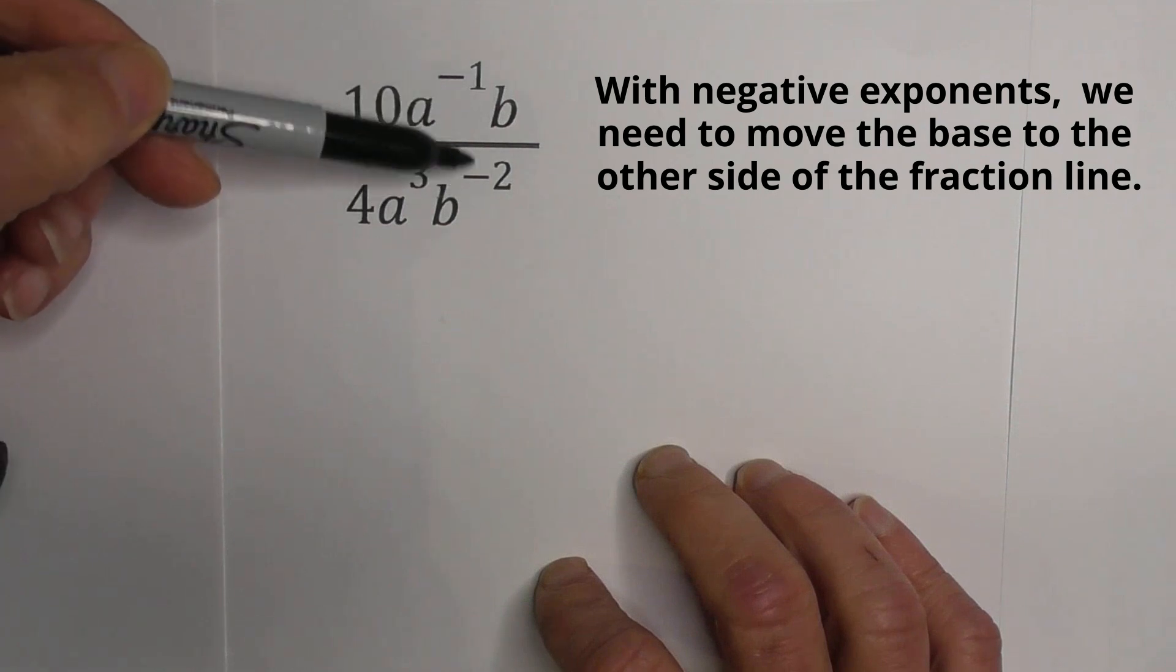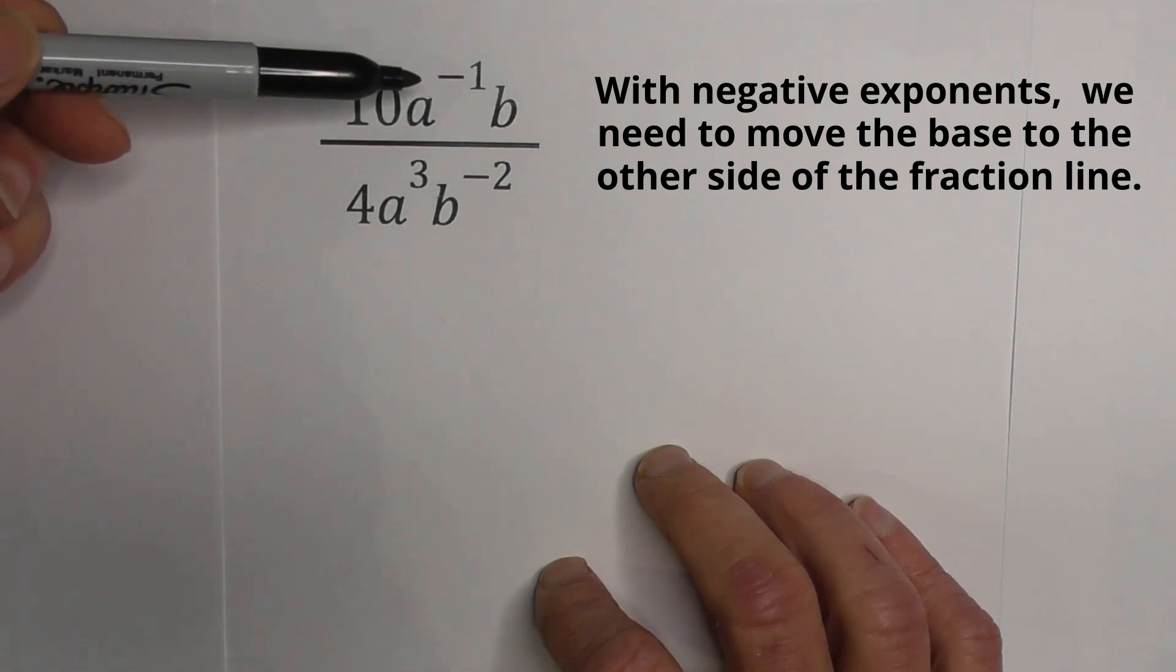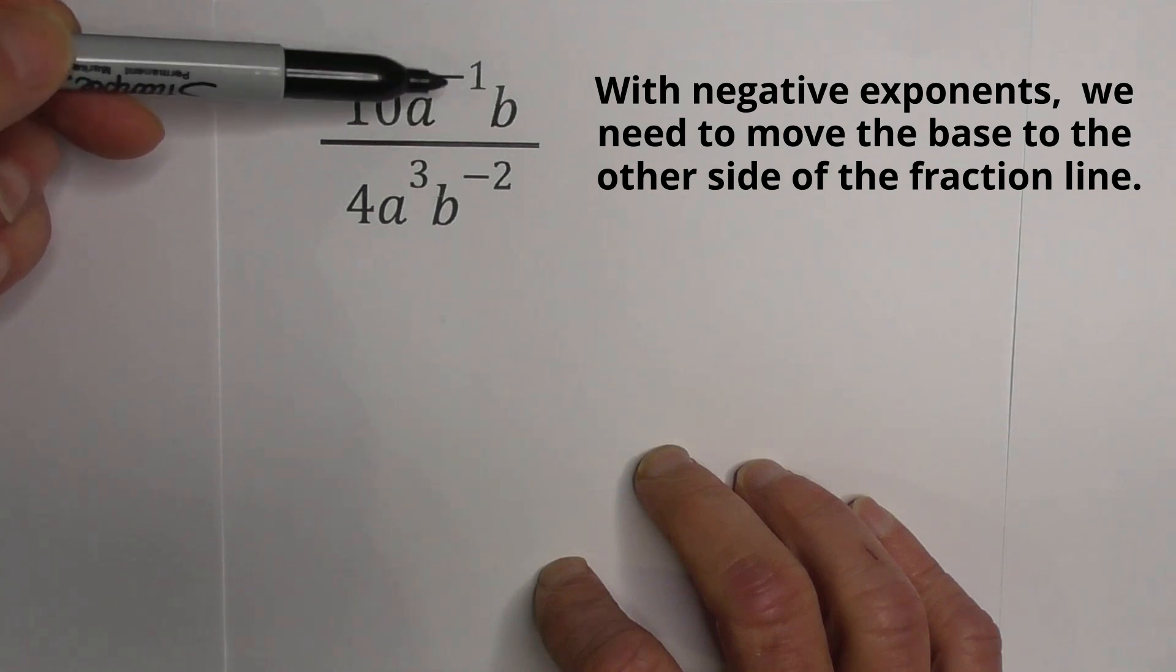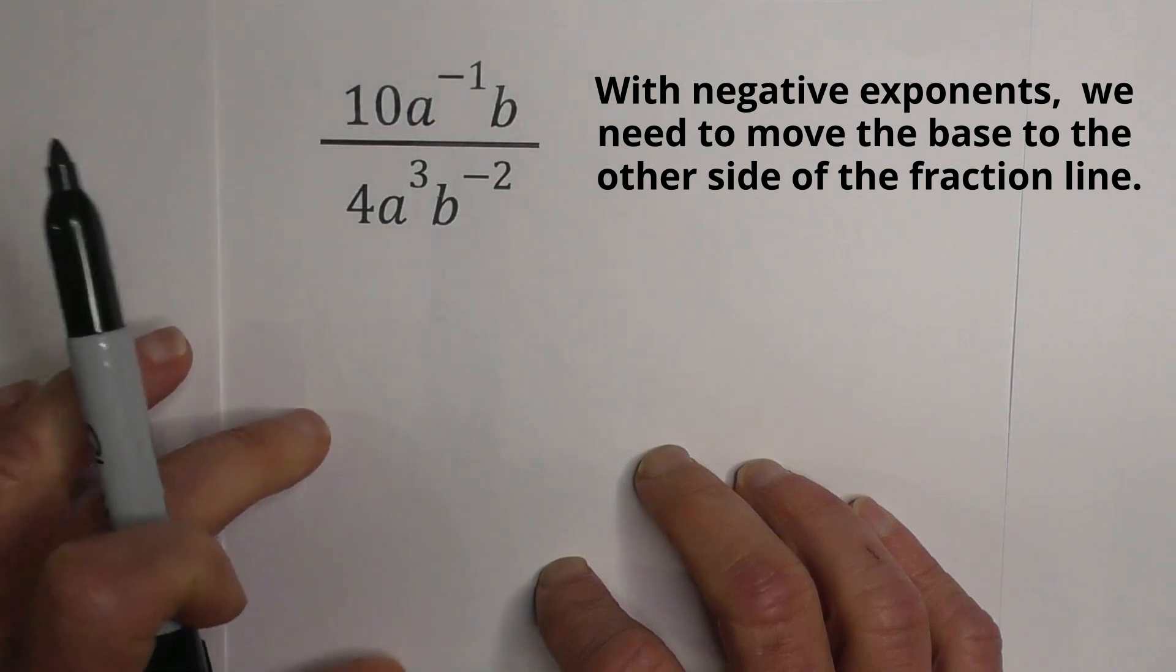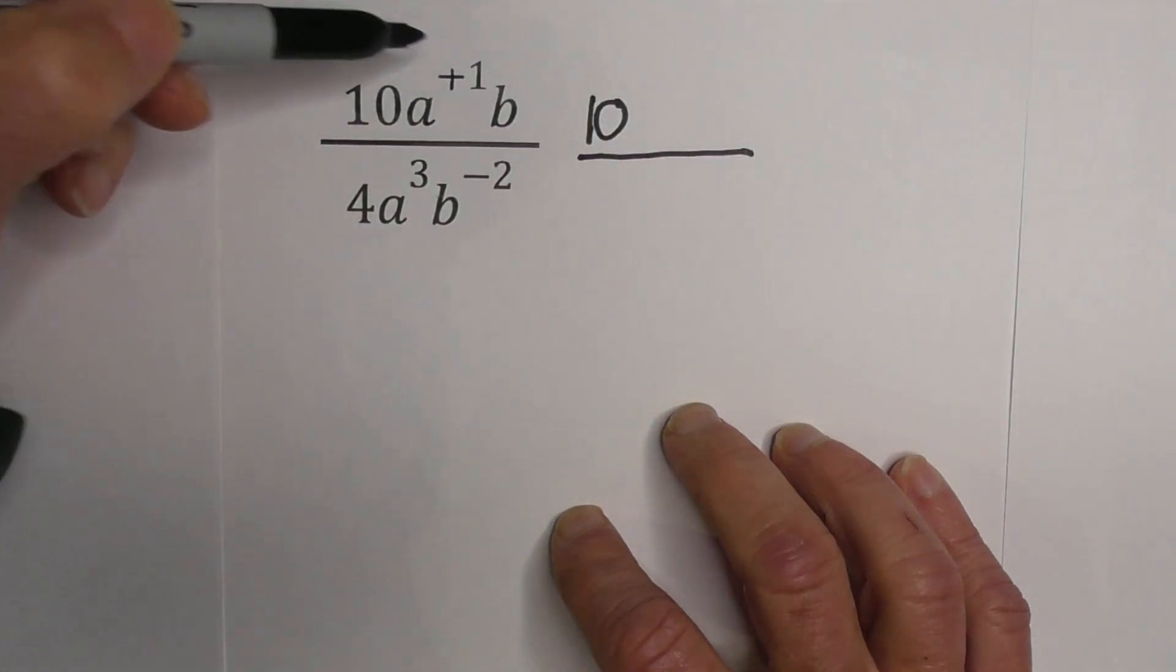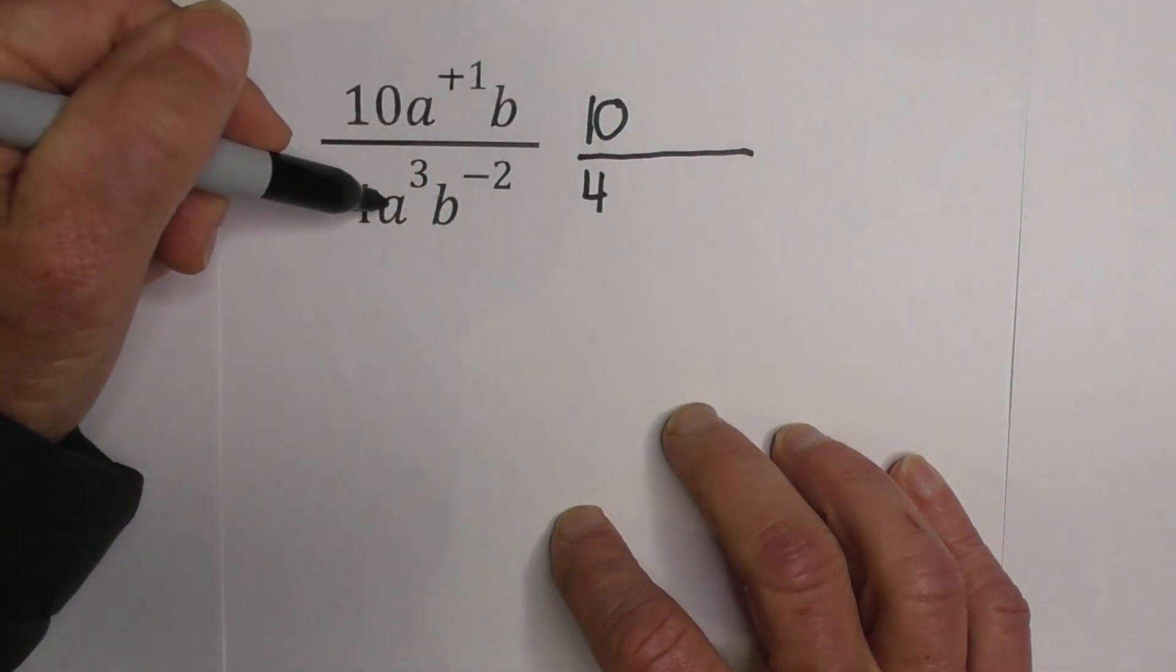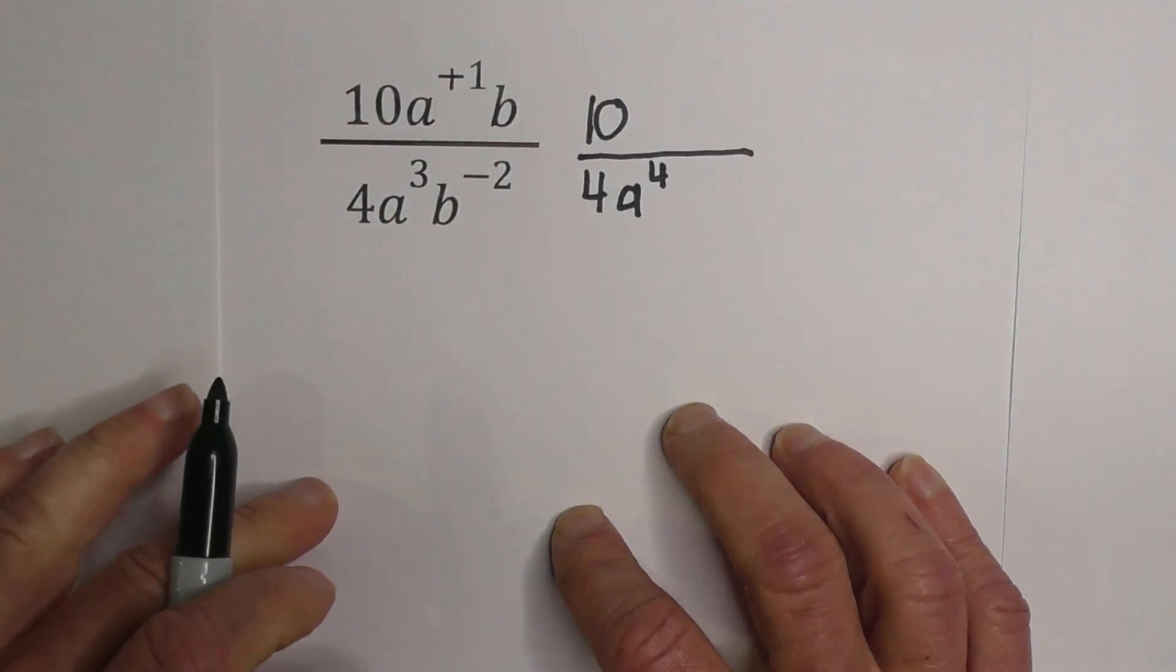Whenever we have negative exponents, we need to try to get rid of them. And we can do this by changing the sign and moving it from the top of the fraction to the bottom, and this will move from the bottom to the top. So let's go ahead and do that. Let's move the 10 over here, and we're going to change this to a positive 1 and move it to the bottom. So I'm going to move the 4 here, so this will become A to the 4th.